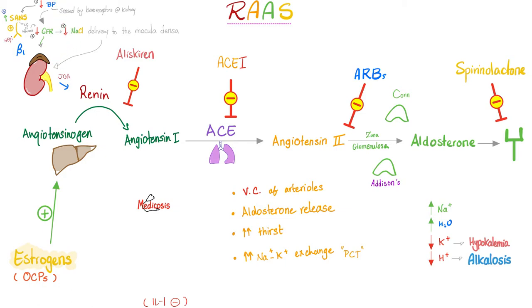Low blood pressure leads to low kidney perfusion, so the kidney triggers renin release to raise blood pressure back to normal. Renin, a protein from the kidney, converts angiotensinogen from the liver into angiotensin 1. Angiotensin 1 is then converted by angiotensin-converting enzyme (ACE) in the lungs into angiotensin 2.